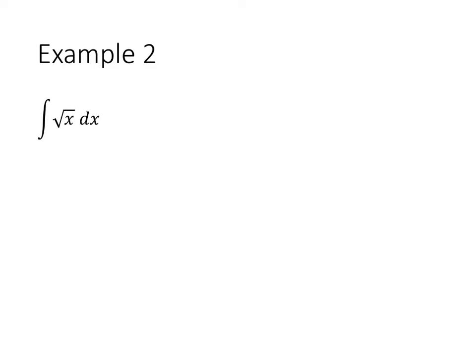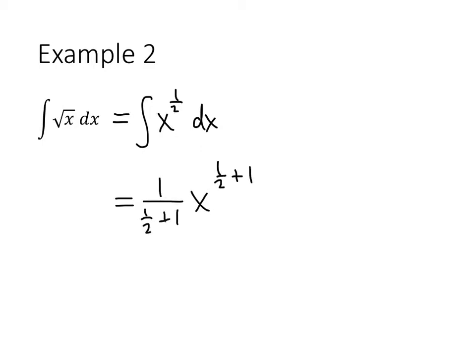Here's another example: the square root of x. We don't have a square root rule, but as we did with derivatives, we can rewrite that square root as x to the 1 half. Now we can use our reverse power rule again. We take 1 half and add 1 to get 3 halves, then divide by that new power, 3 halves. Dividing by 3 halves gives us 2 thirds, so our answer is 2 thirds x to the 3 halves, plus c.